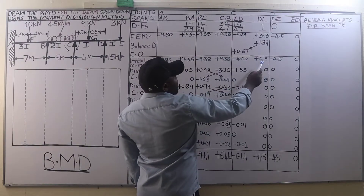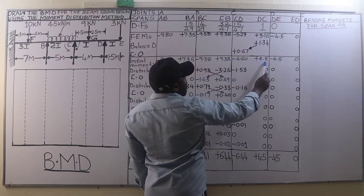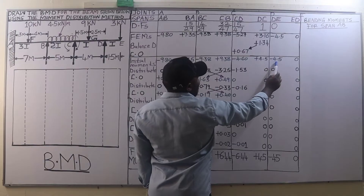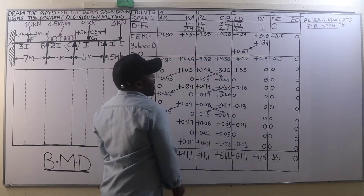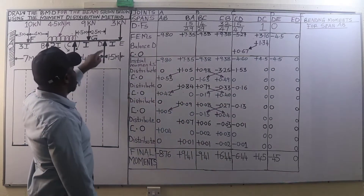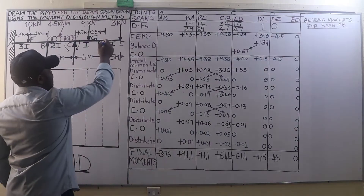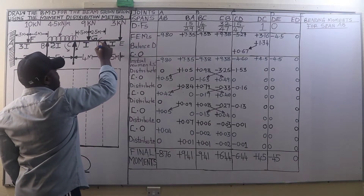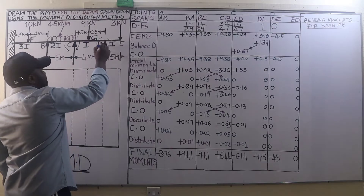On member DC we add the two moments to get positive 4.5, and this one is going to be negative 4.5. You will find that joint D is now balanced — the resultant of the moments is zero, meaning the sum of anticlockwise and clockwise moments cancel.